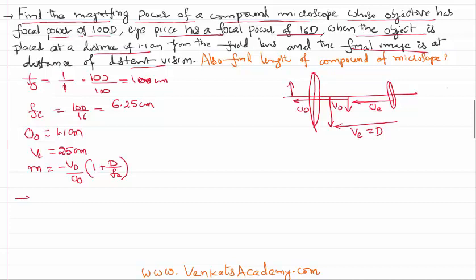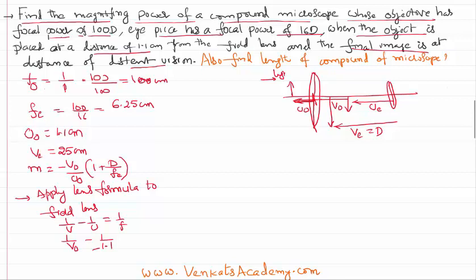Let's apply lens formula with proper sign convention to the field lens. I know the formula, you know the formula: 1 by v minus 1 by u equal to 1 by f. 1 by v is v_o as we need to calculate. 1 by u_o is 1.1, but that 1.1 is measured from the field lens, and the light is falling like this. Being the distance is measured against the direction of the light from the center of the given lens, it shall be treated as negative. 1 by f_o, the f_o value we have already found as 100, or else the power is given as 100 diopter.